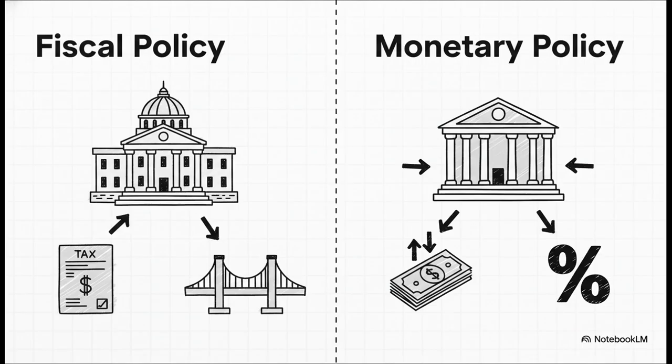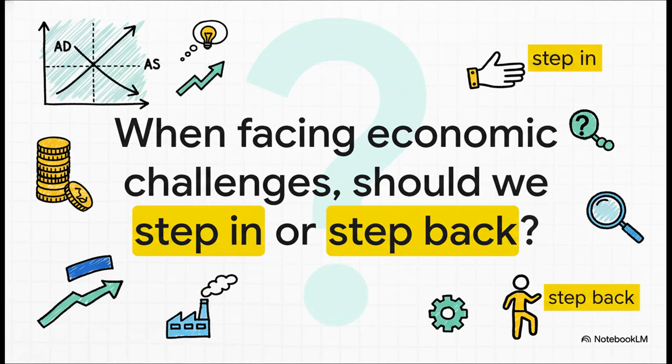This big philosophical split leads to two totally different toolkits. The Keynesians tend to favor fiscal policy, where the government directly gets involved to boost spending with things like tax cuts or big infrastructure projects. The classical economists usually prefer monetary policy, where the central bank works behind the scenes, trying to influence the economy by adjusting interest rates. And that brings us right back to the central question policymakers are still wrestling with every time the economy starts to stumble: should we step in or should we step back? This is not just some old debate from a textbook — it's happening right now. And by understanding this AD/AS model, you now have the framework to actually understand what on earth they're all arguing about.